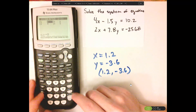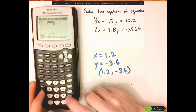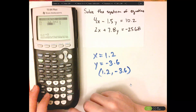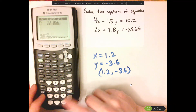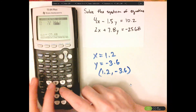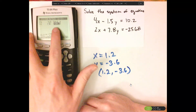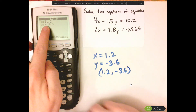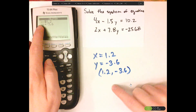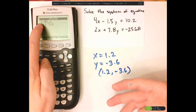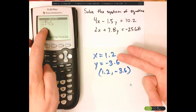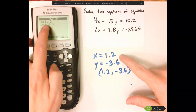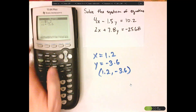So going across: 4, negative 1.5, 10.2, then 2, 7.8, and negative 25.68. Enter. So all those are in there, then push solve. Notice we get the same result. It shows x1 and x2, but x1 is your x and x2 is your y. We got the same thing: 1.2 and negative 3.6.